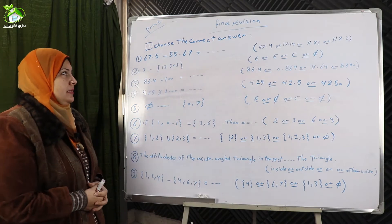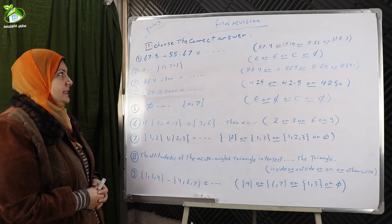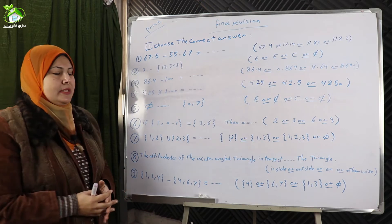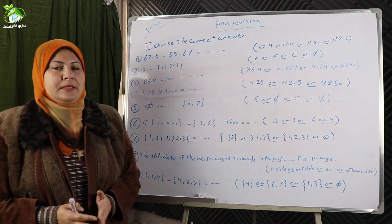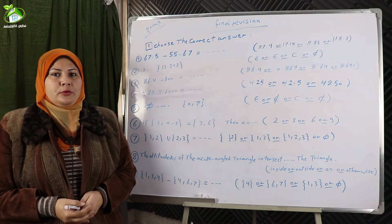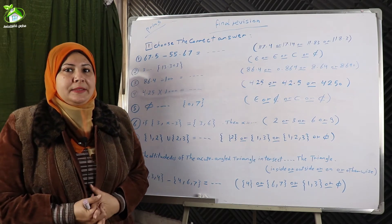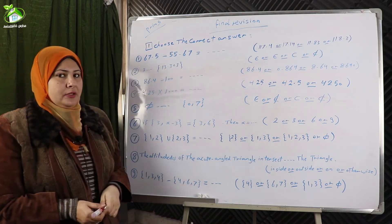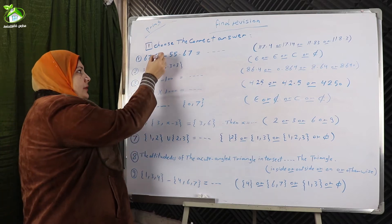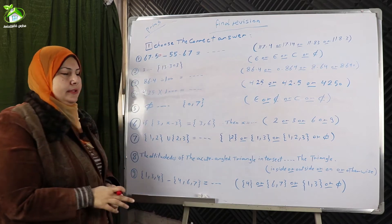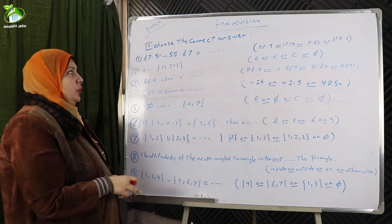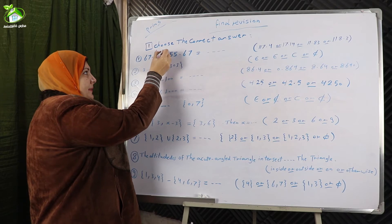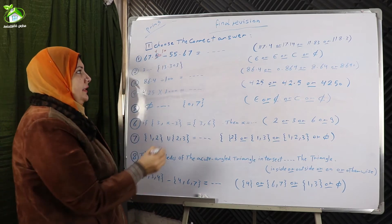Choose the correct answer. Number one: 67.5 minus 55.67. To subtract any two decimal numbers, the number of decimal parts must be equal. There is one decimal part and there are two decimal parts, so I will put zero on the right. Zero minus seven can't be — borrow one. Five became four, zero became ten. Ten minus seven equals three.